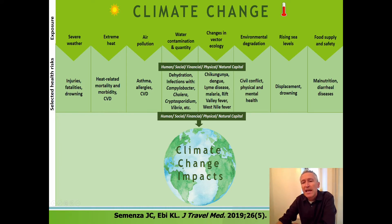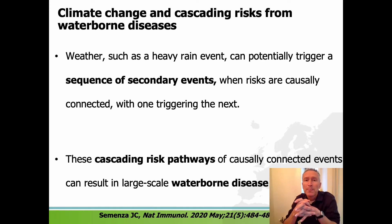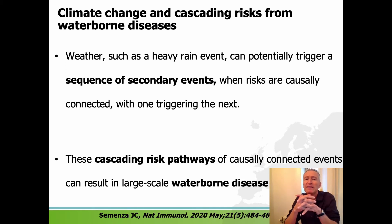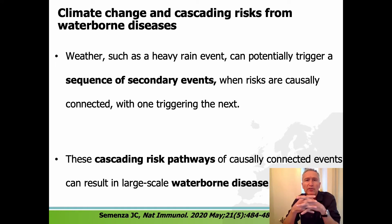The way I would like to look at this is using the framework of cascading risk pathways. What I mean by that is that if you have an extreme rain event, as an example, that can potentially trigger a sequence of secondary events that are causally connected to that initial event. These cascading risk pathways can then result in large-scale waterborne outbreaks. This concept can be applied to a lot of other outcomes in public health, but let's focus on waterborne diseases as an example.